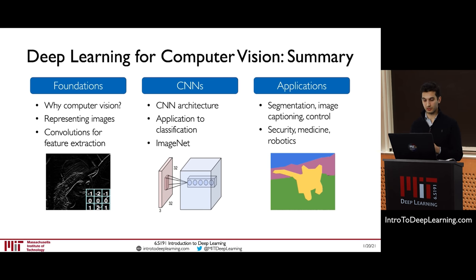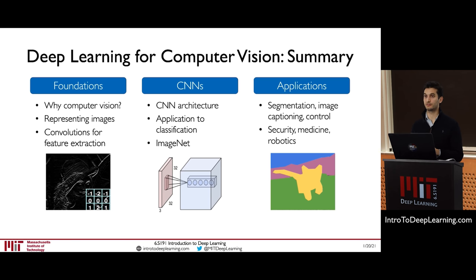I'd like to point everyone to the next lab, specifically focused on computer vision. You'll build your first convolutional neural networks, then build facial detection systems, and learn how we can use unsupervised generative models — covered in the next lecture — to make sure these computer vision facial classification algorithms are fair and unbiased. Stay tuned for the next lecture on unsupervised generative modeling. Thank you.